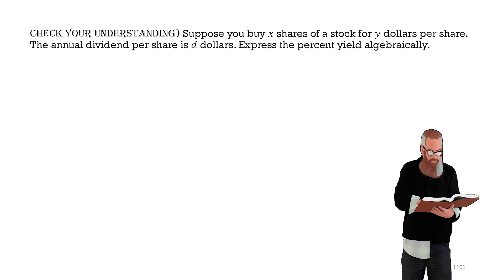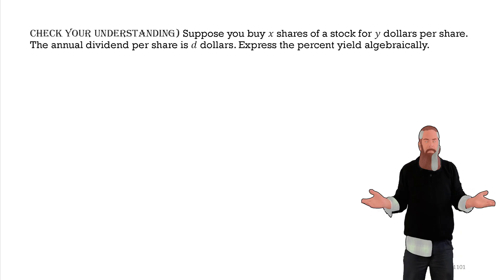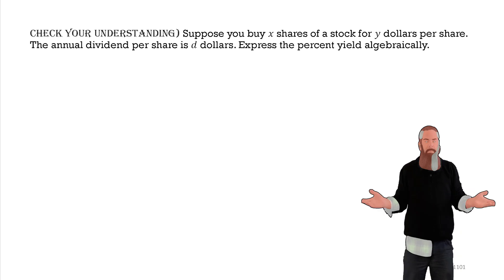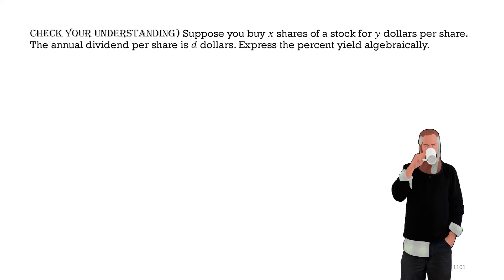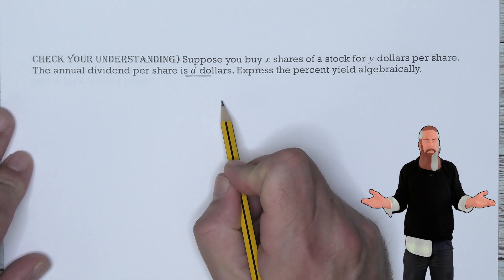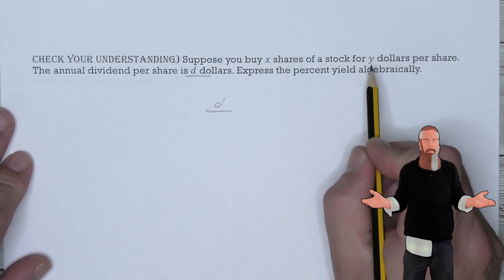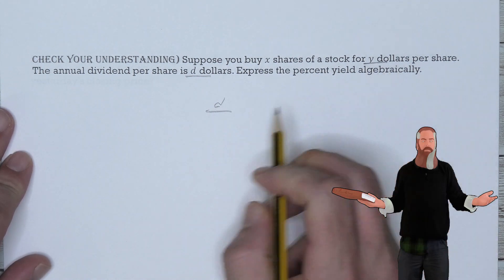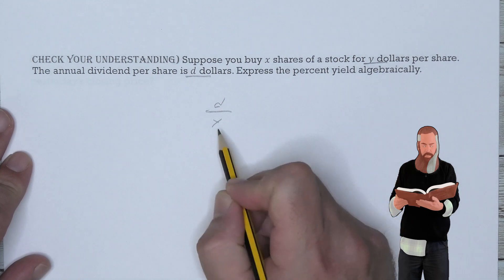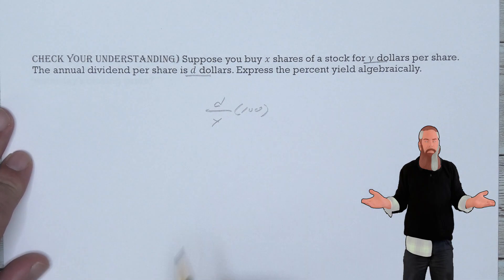Let's check our understanding. Suppose you buy X shares of a stock for Y dollars per share. The annual dividend per share is D dollars. Express the percent yield algebraically. D dollars is the dividend, so we divide the dividend by the price per share Y. To turn this into a percent, simply multiply by 100. So the yield is (D / Y) × 100.